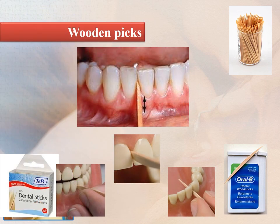Regarding wooden picks or toothpicks: soft triangular wooden picks or plastic alternatives are placed in the interdental space so that the base of the triangle rests on the gingiva and the sides are in contact with the proximal tooth surfaces. The pick is then repeatedly moved in and out, removing soft deposits from the teeth and mechanically stimulating the papillary gingiva.